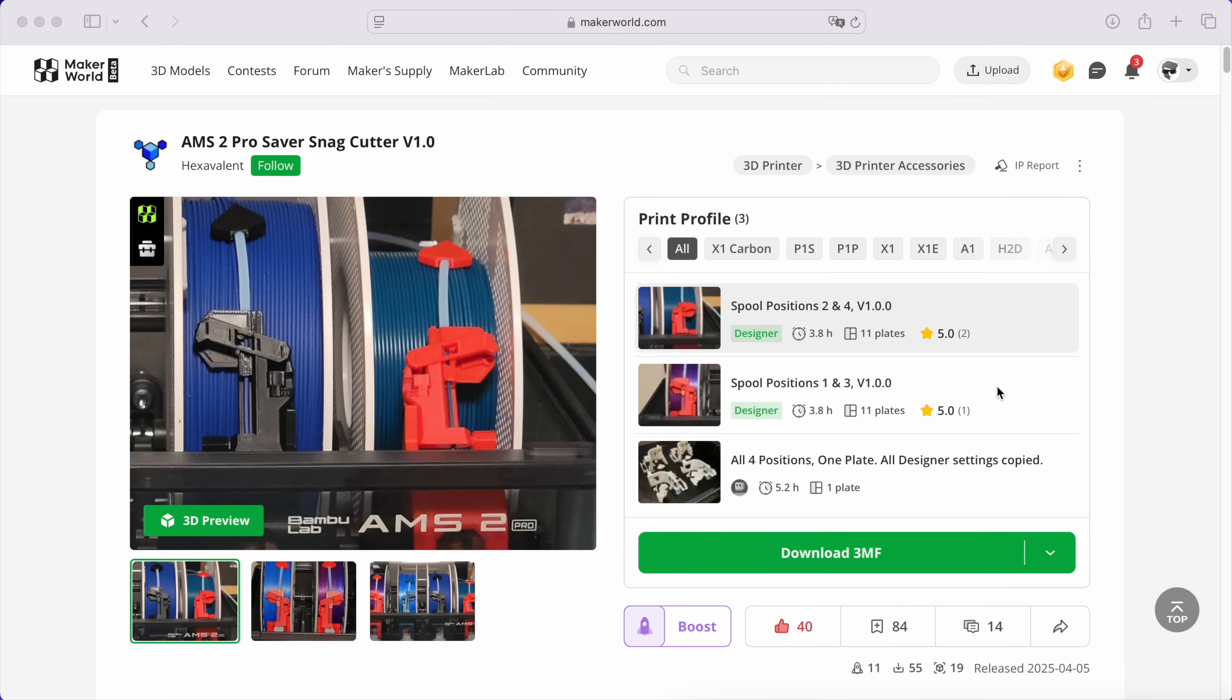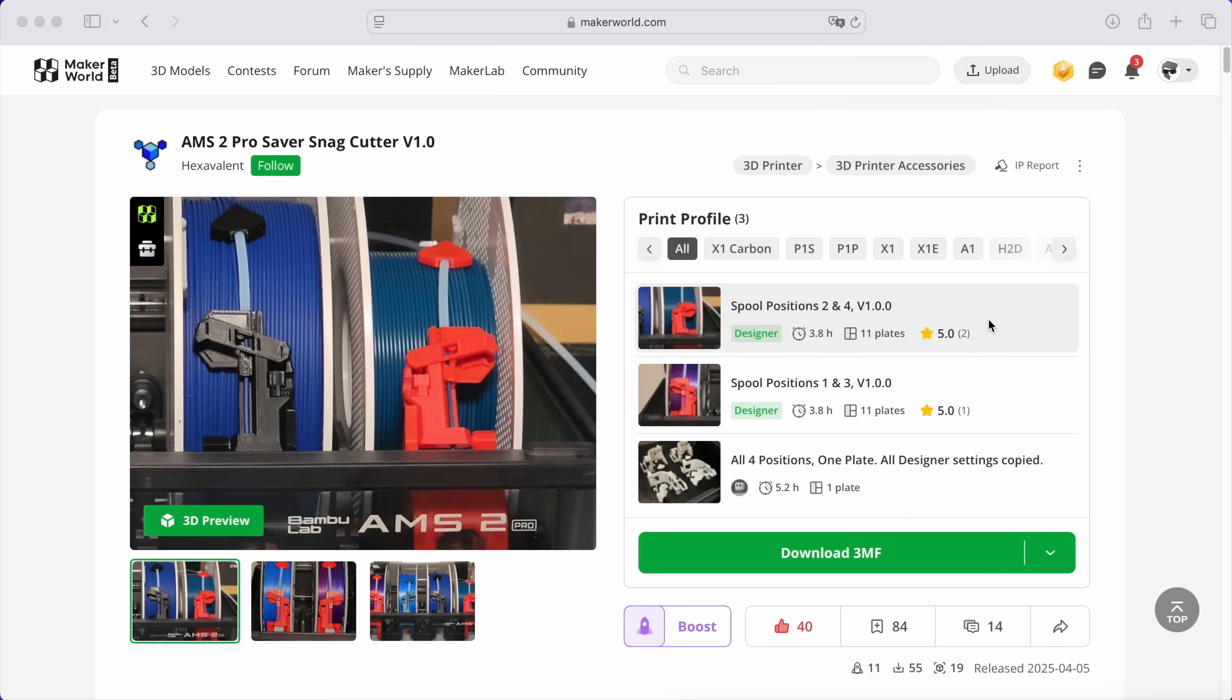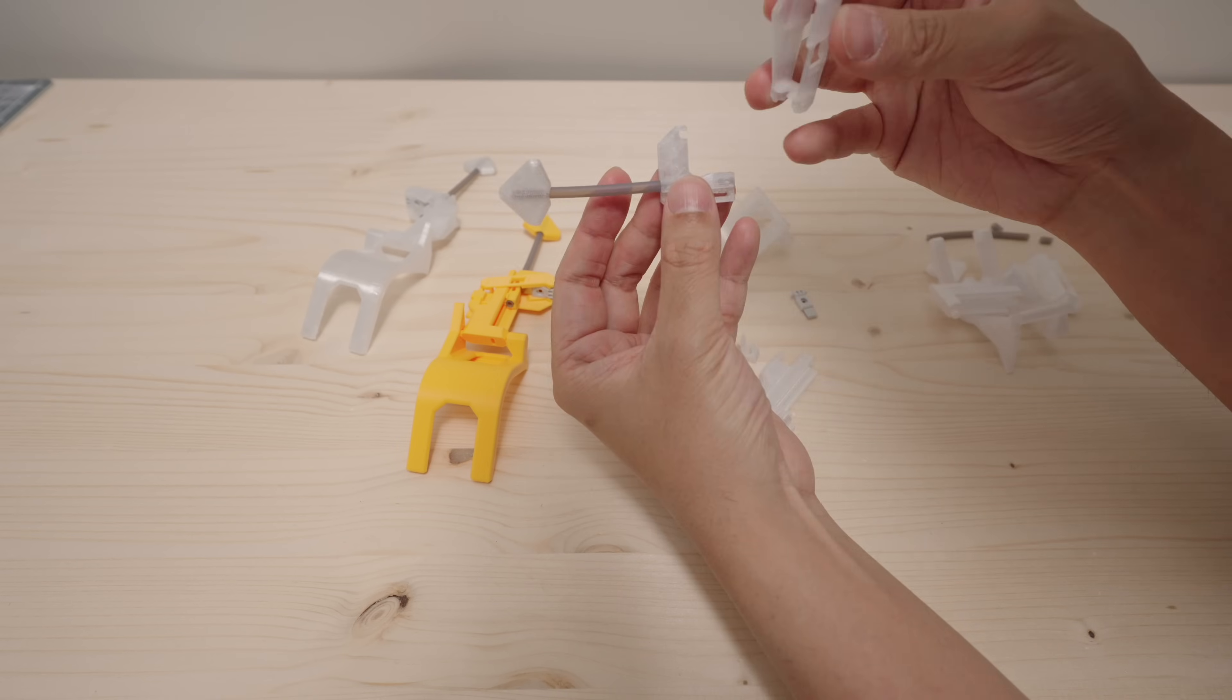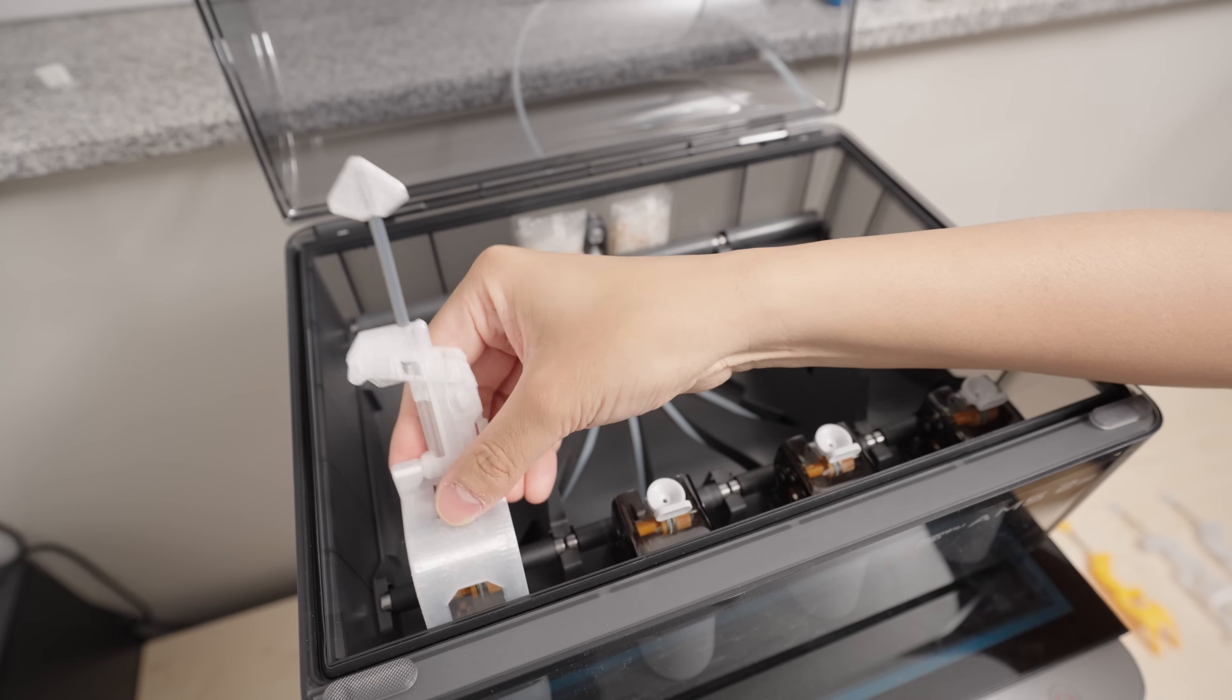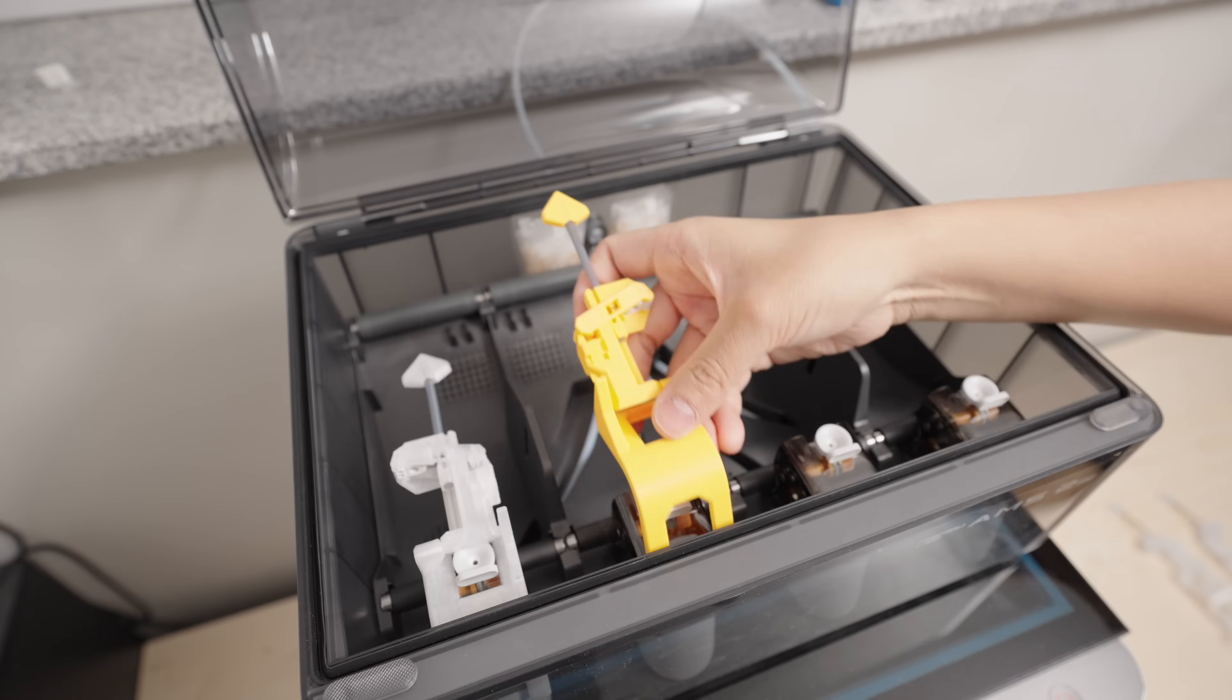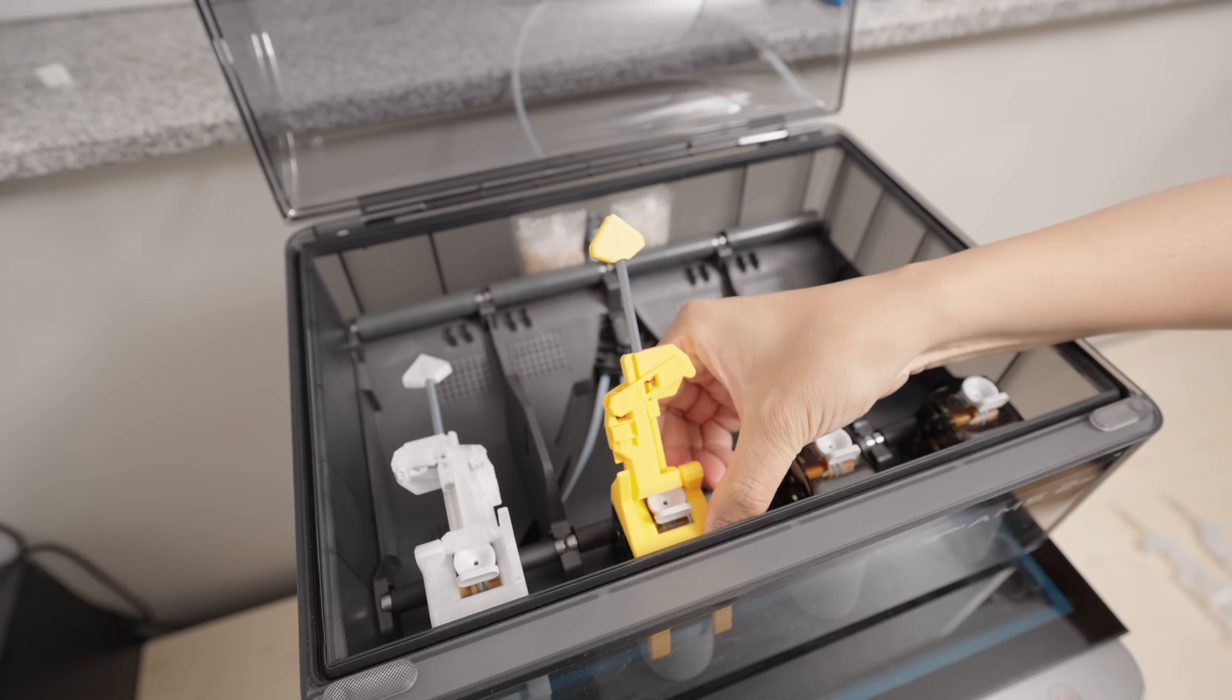I'm going to install four units in my AMS2 Pro so in this case I've printed two units for the spool positions one and three in the AMS and another two units for the spool positions two and four. Let's assemble everything real quick and install them in the AMS2 Pro. It is super easy to install the cutter in the AMS2 Pro. Just slide it in place and push it down gently until you hear the clicking sound when it snaps into place.